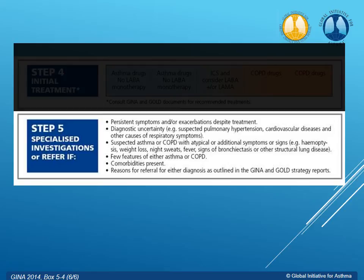Still in the category of asthma versus COPD: look for other things if what you're doing isn't working. If they have persistent symptoms or exacerbations even though you're trying to treat them, go ahead and refer. Don't forget about things like pulmonary hypertension, cardiovascular disease, congestive heart failure. If they start having atypical signs and symptoms — weight loss, night sweats, fever — get a specialist in to help you out. Those would be reasons for referral.